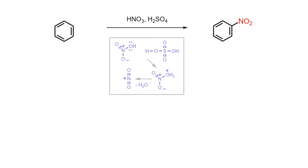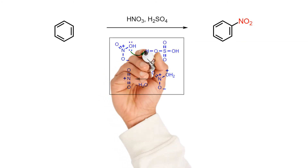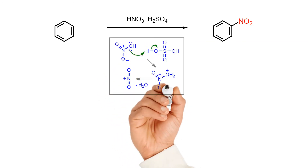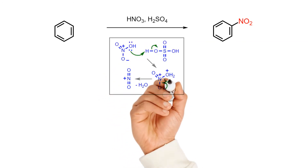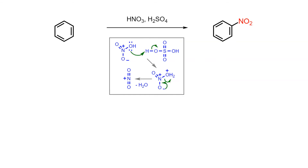To form the electrophile in this reaction, the nitric acid is protonated by sulfuric acid, and then a molecule of water is lost from the conjugate acid to give the powerfully electrophilic nitronium ion.